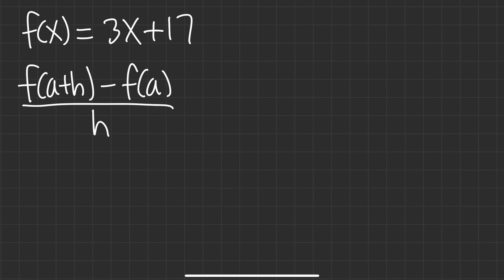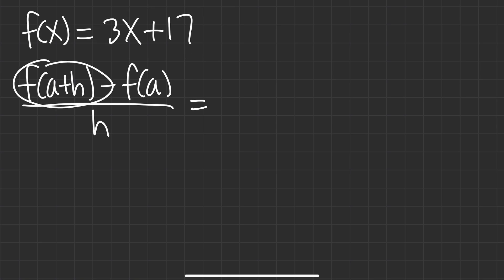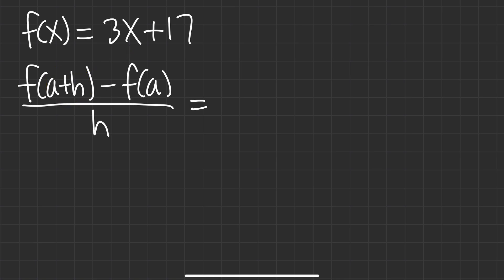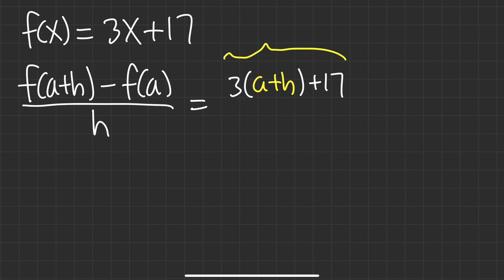The first thing is that when we have this function, to find f of a plus h, we just have to plug in a plus h into the x. So the first part is going to be 3 times a plus h, and then after that we have the plus 17. This right here is the first part, f of a plus h.